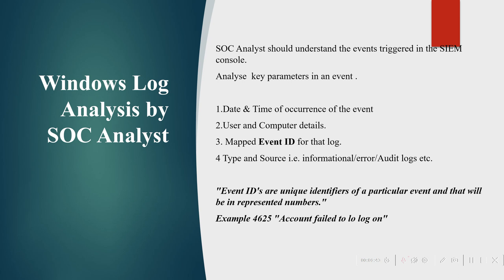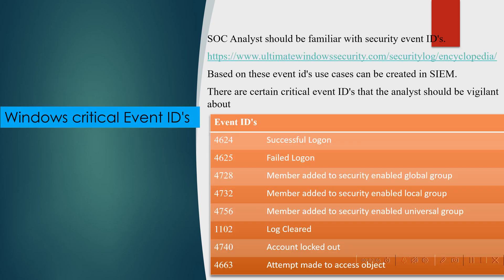Event ID is just a unique identifier of a particular event, represented in a number format. Examples include 4625, 4624, and 4740. For example, event ID 4625 corresponds to the message 'Account failed to log on.'